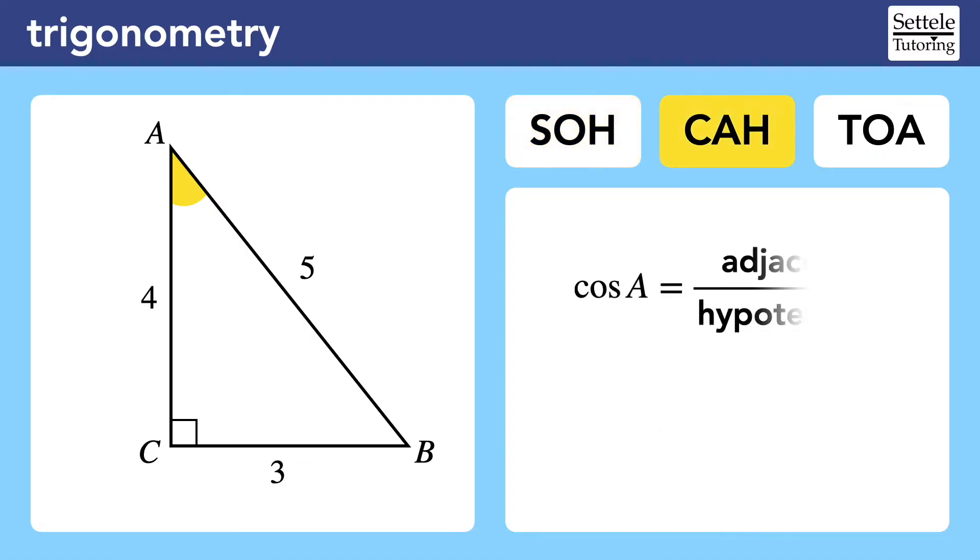CAH gives us the formula for cosine, which is adjacent over hypotenuse. Now we look at the adjacent side, which is 4, and the hypotenuse, which is still 5. So the cosine of angle A is 4 fifths.